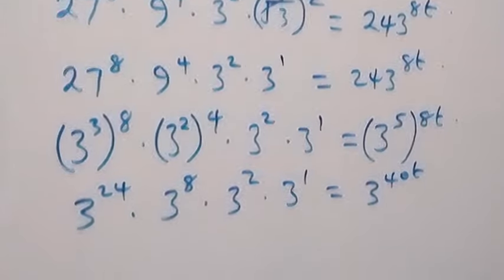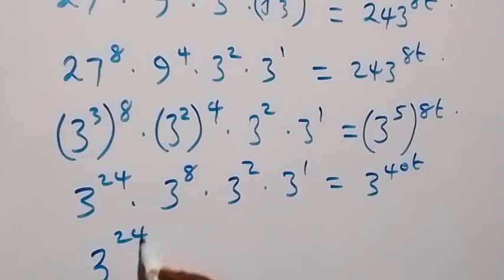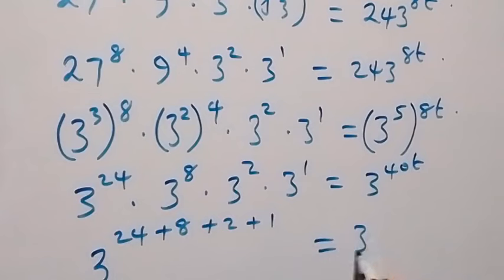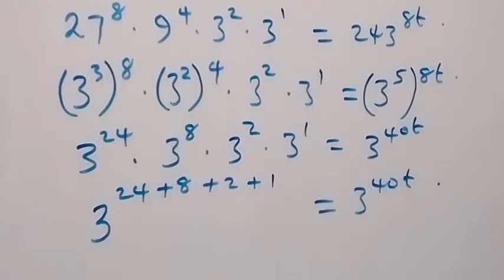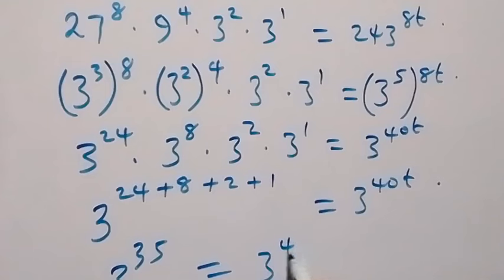From here we've seen from the law of indices we can sum the powers. We have 3 raised to power 24 plus 8 plus 2 plus 1, equals 3 raised to power 40t. When we sum this, we have 3 raised to power 35, equals 3 raised to power 40t.